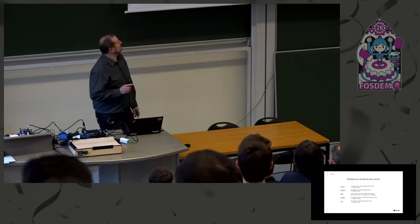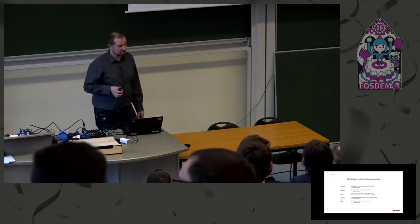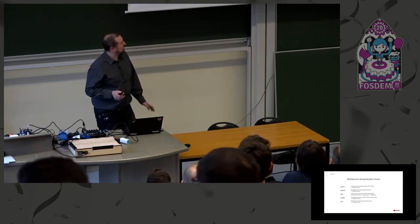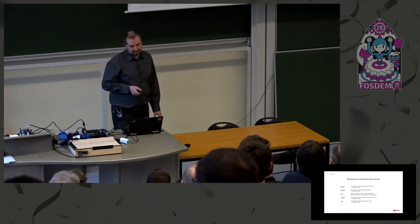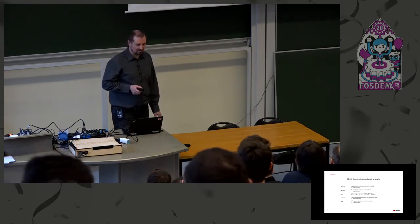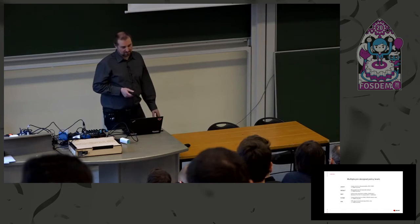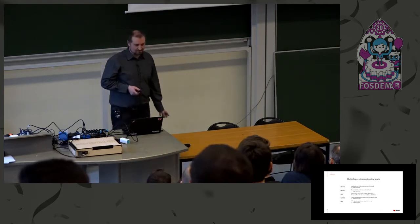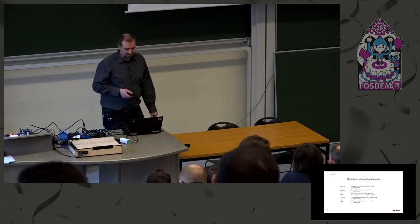Let's talk about the levels we provide, which are kind of pre-designed. The most lenient level is LEGACY, which provides 64-bit security. It also enables RC4 and 3DES, but only for some applications — for libraries where we decided it's no longer relevant at all, it's disabled. The DEFAULT level — here are the levels for Fedora — still enables TLS 1.0 and TLS 1.1, but disables all RC4 and 3DES.